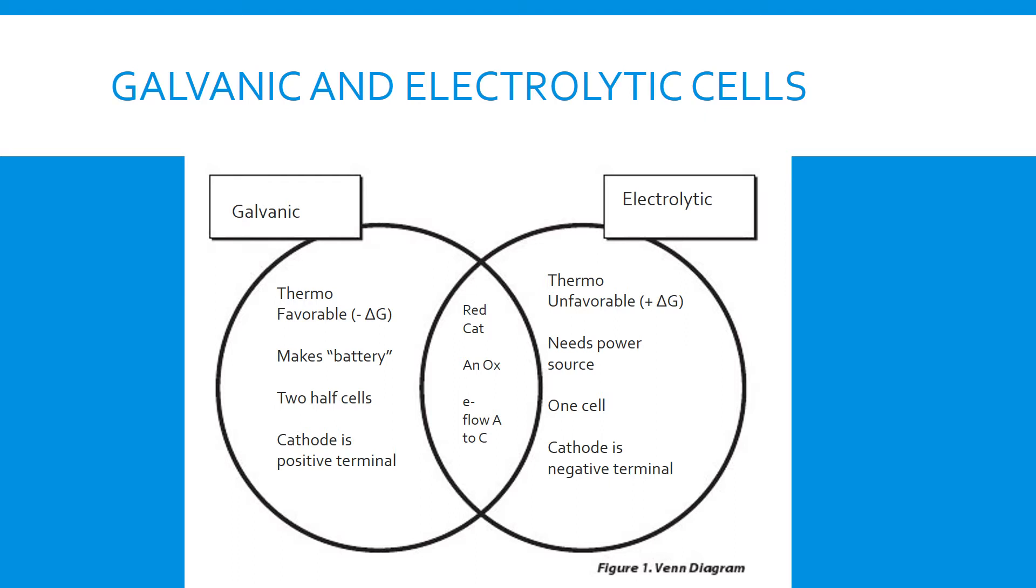Galvanic and electrolytic cells. So here's the differences between them. Galvanic cells are thermodynamically favorable. They get negative delta G's. They are basically making a battery. You have two half cells for the picture. And your cathode is your positive terminal. For electrolytic cells, those are thermodynamically unfavorable, which gets a positive delta G. It needs a power source to be able to operate. It's usually contained in one cell. And the cathode is the negative terminal.